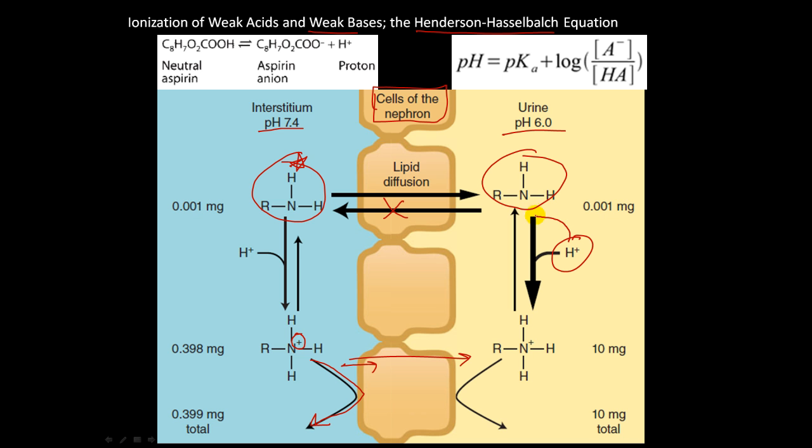So what you want is you want to add a proton to this molecule here, and then the molecule becomes charged, and then it won't bounce off the wall. It won't diffuse back over into the interstitium. So this is a way that ionization of weak acids and weak bases can happen so that drugs can be eliminated from your body through this kind of chemistry.